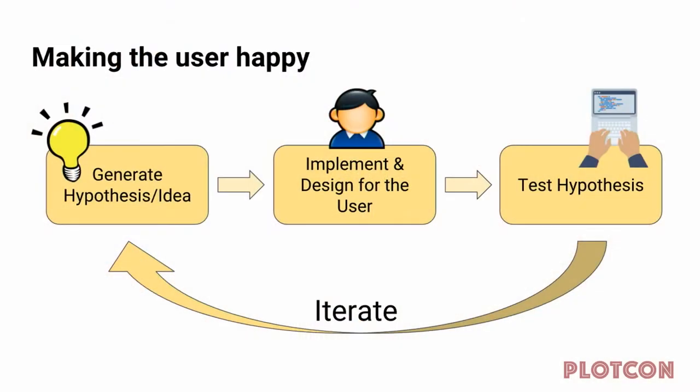At that point, you start the process again — make a new hypothesis, go back to the start, and continue to iterate and iterate and iterate. It might not be perfect; you might make some mistakes, and that's okay. As long as you keep thinking about your user and keep making data-driven solutions, you're going to make the user happy.